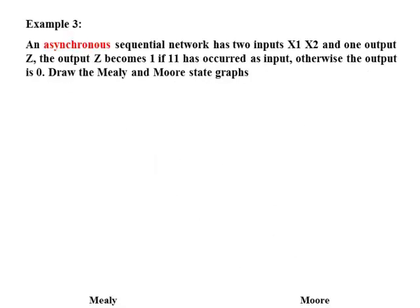Example 3. An asynchronous sequential network has two inputs, X1 and X2, and one output Z. The output Z becomes 1 if 1, 1 has occurred as input. Otherwise the output is 0. Draw the Mealy and Moore state graphs. The difference between synchronous and asynchronous sequential networks is that in asynchronous sequential networks, only 1 bit can change in the input at a time. For example, the initial state 0, 0 cannot change directly to 1, 1 — it can only change to 0, 1 or 1, 0. Similarly, the input 0, 1 cannot change directly to 1, 0 — it can only change to 0, 0 or 1, 1.